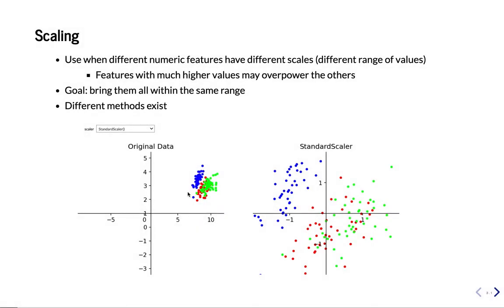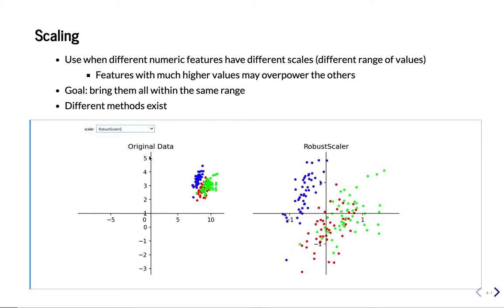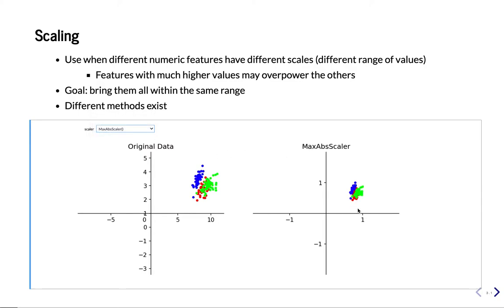One way is to use a standard scaling technique — we transform the data to be centered around 0 with unit variance. Another technique is robust scaling, which works with quantiles. There is min-max scaling, where we scale between 0 and 1. There is normalization — we'll talk more about that later. And max absolute scaler is similar to min-max, but it maintains zeros.